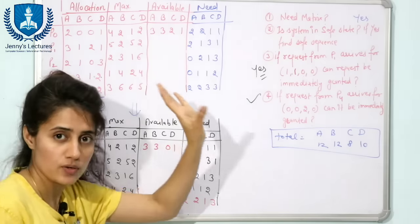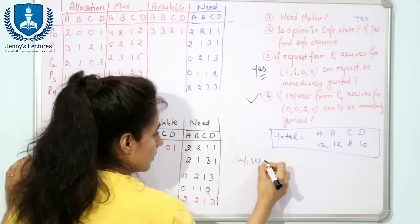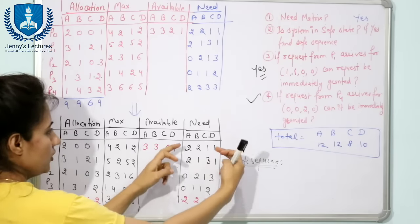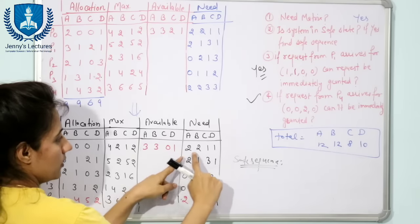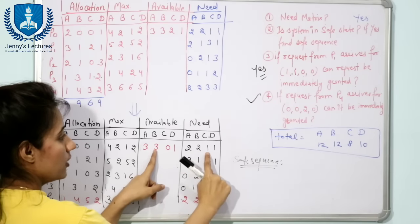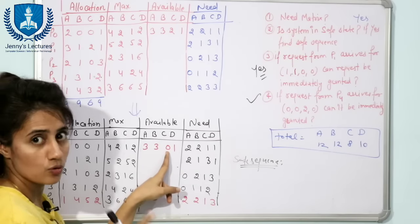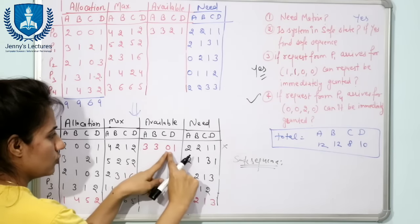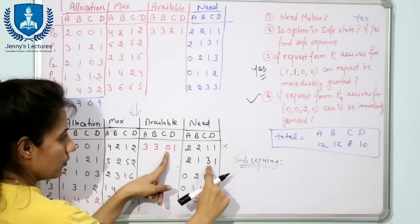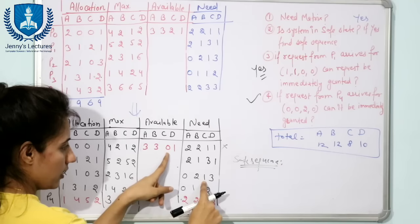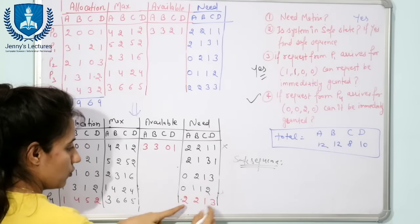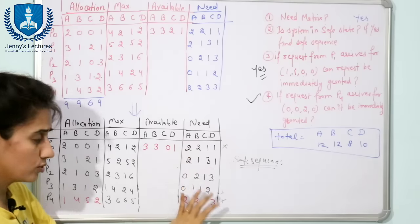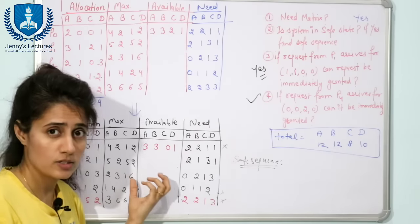Now apply the safety algorithm on this modified state. With the new available resources, check which process need can be fulfilled. For every process, check the requirement for resource C — the available instances of C is only 0. P0 requires 1 instance of C, but we have 0. P1 requires 3 instances, we have 0. P2 requires 1, we have 0. P3 requires 1, we have 0. P4 requires 1, we have 0. The system is not able to fulfill any process need.